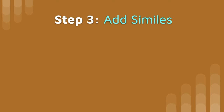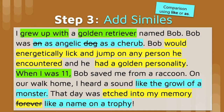Step three: we're getting into our imagery, and we're going to start by adding similes. Remember, similes use comparison with like or as. Up at the top, I already had the description that he was an angelic dog — but why not add a comparison there? A cherub is just a small angel, so I could say 'Bob was as angelic as a cherub.' I'm comparing him to an angel.